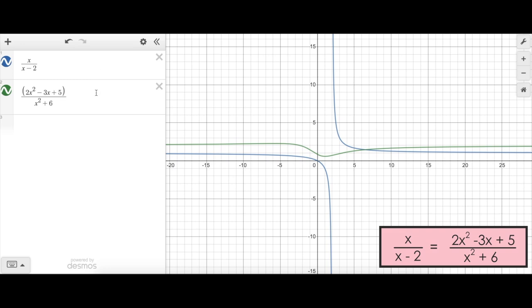What you can do is just type your two expressions into a Desmos sheet. And what Desmos will do is graph both functions for you. You can see I've got x over x minus 2 in blue, and I've got the second function here in green.